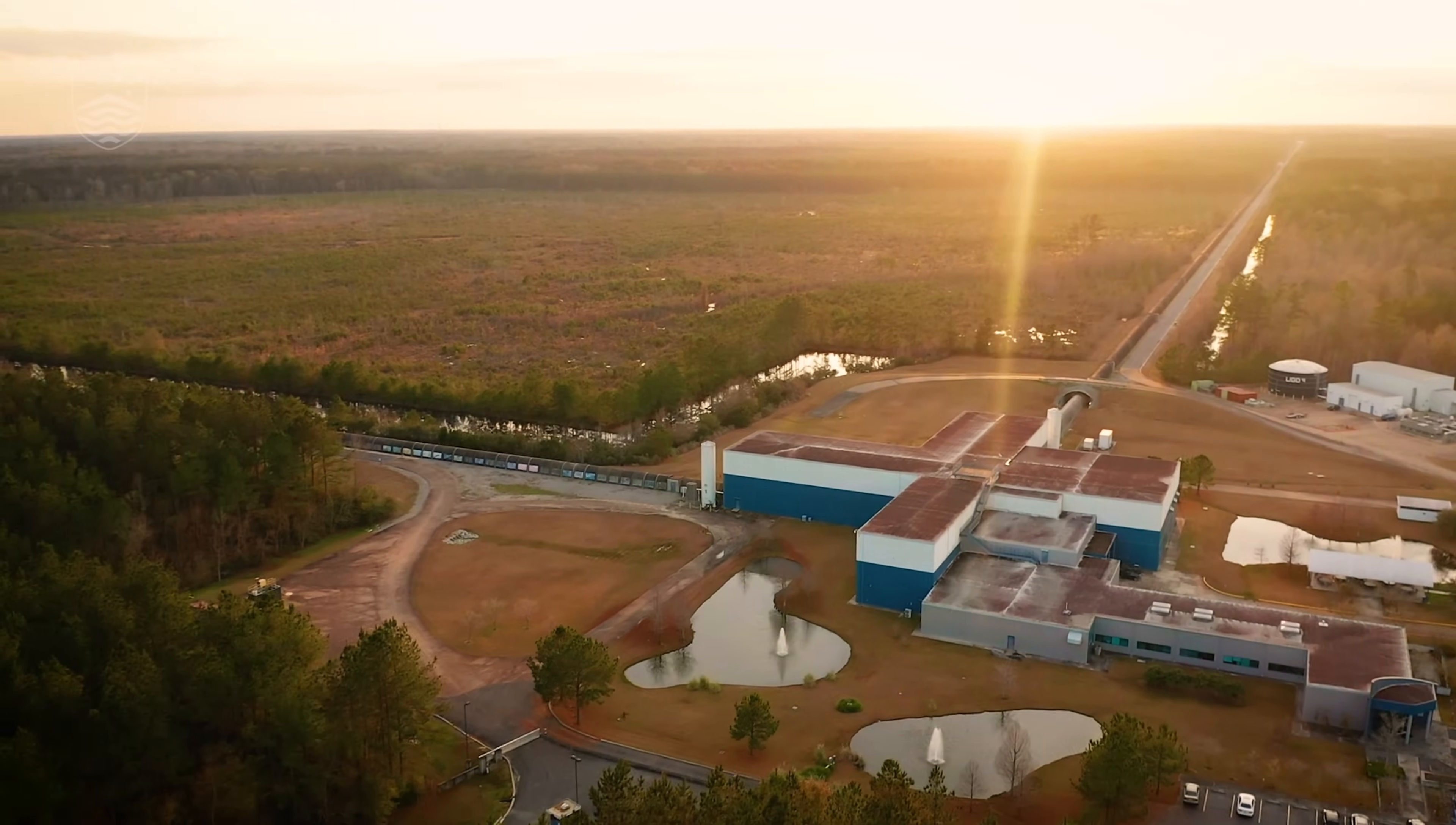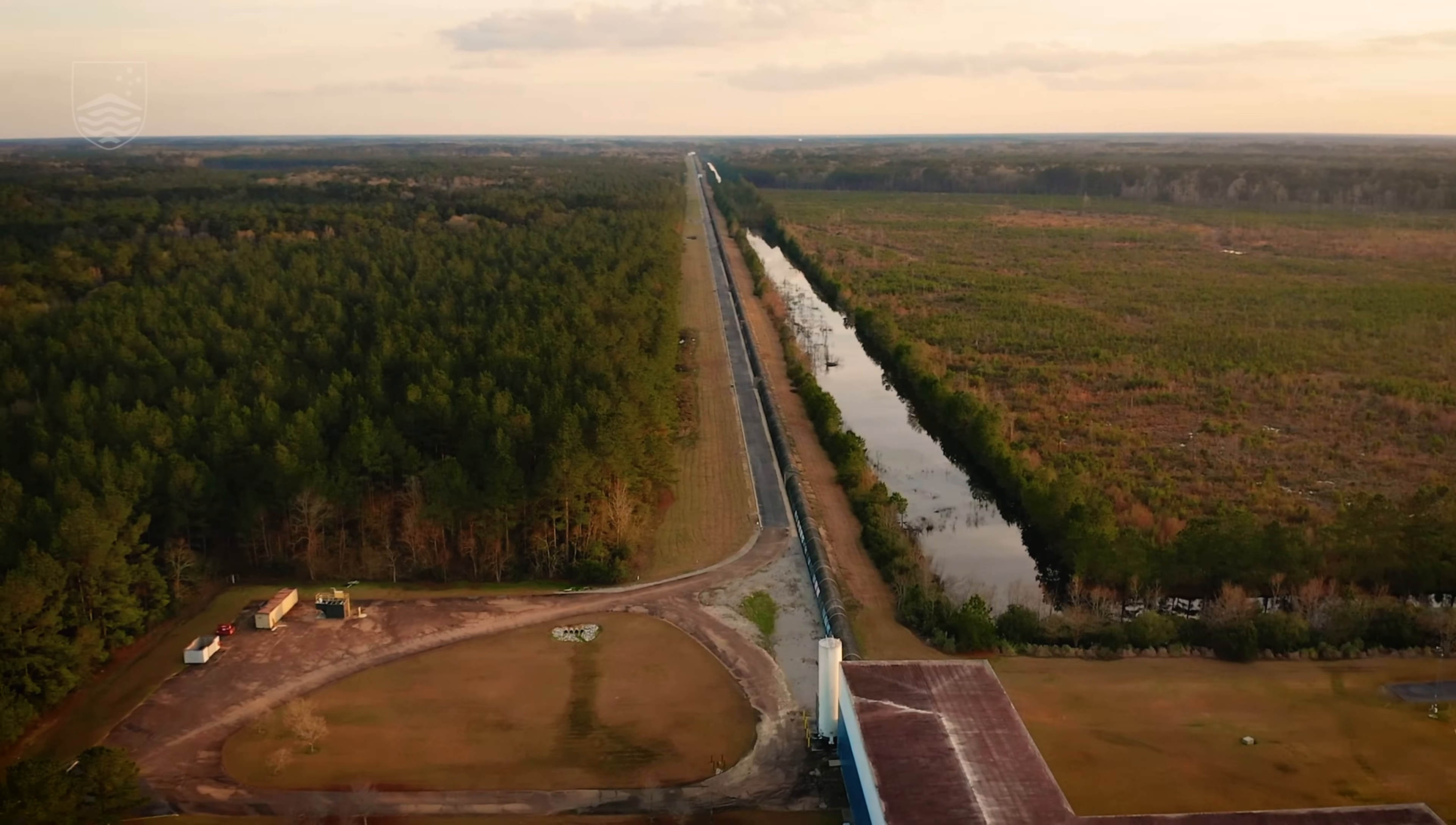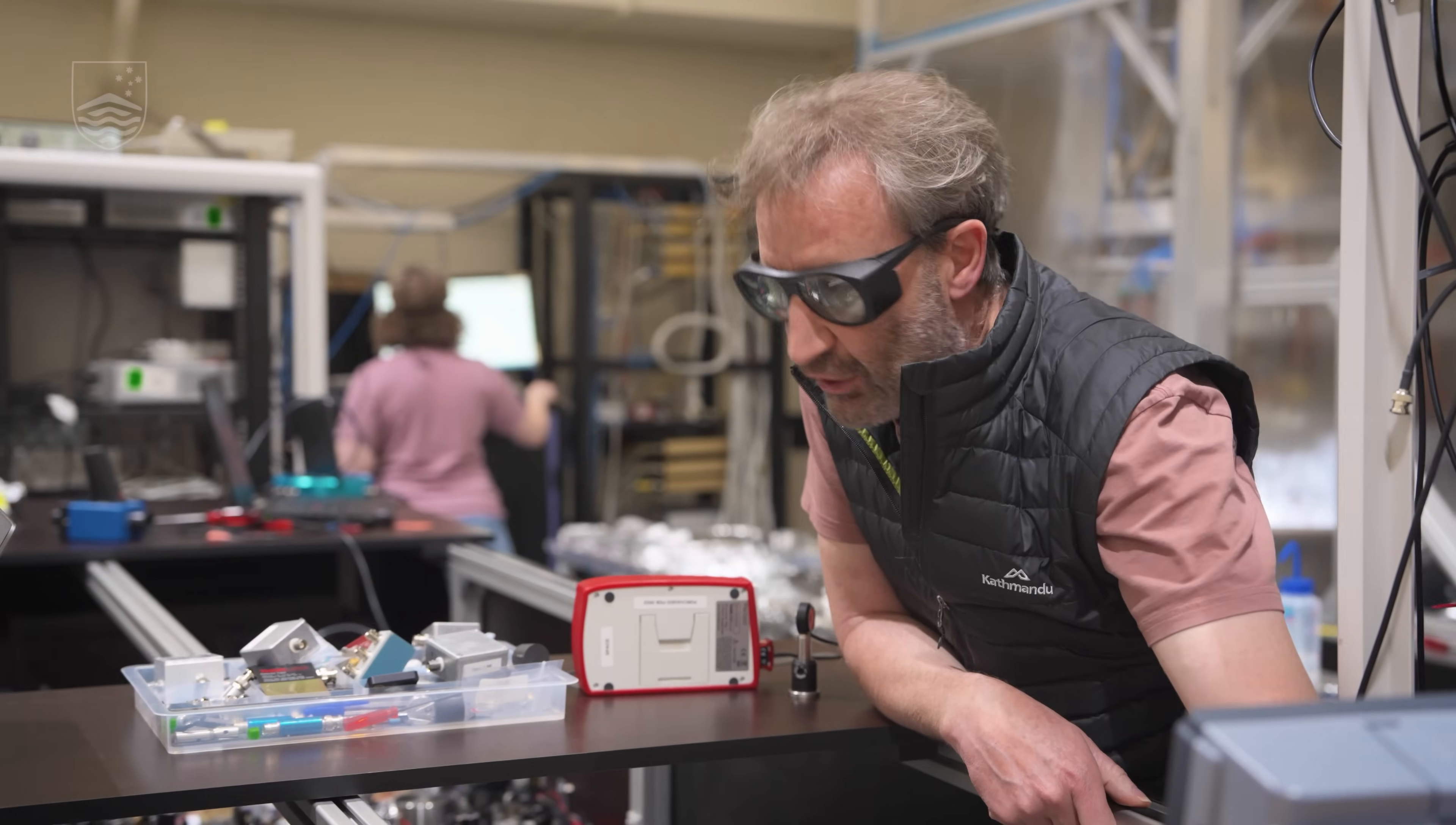So the first detection of gravitational waves happened with the Laser Interferometer Gravitational-Wave Observatory, or LIGO for short. So teams from ANU had spent months and years on sites in the United States installing systems that we designed here, tested here and then installed into LIGO.